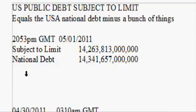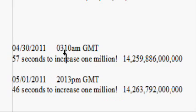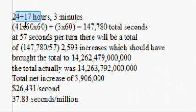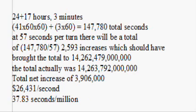I took the time difference between the two measurements — April 30th 2011 and May 1st 2011. There's a full day plus 17 hours and 3 minutes, so 41 hours total. Multiplying 41 hours by 60 minutes by 60 seconds, plus 180 seconds for the 3 minutes, worked out to almost 150,000 seconds elapsed. At 57 seconds per turn, dividing by 57 gives 2,593 — that's how many times it should roll over a million, or about 2.593 billion dollars increase.